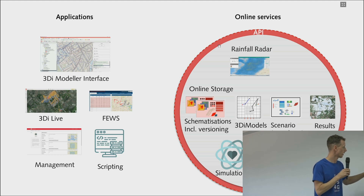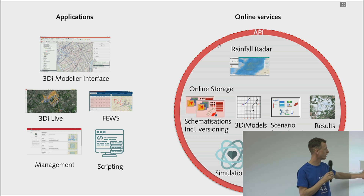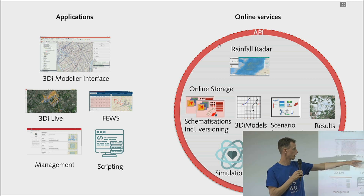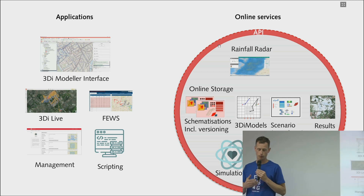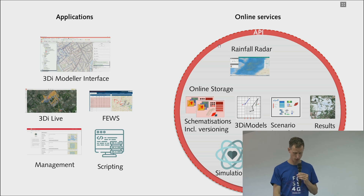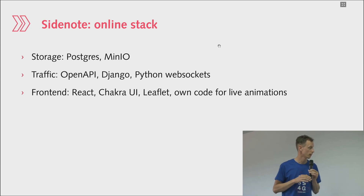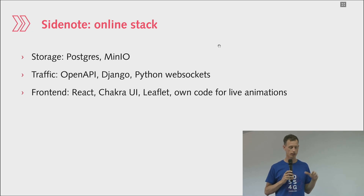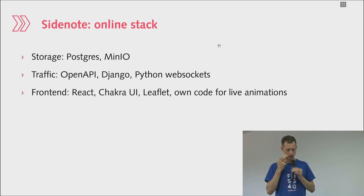All our own applications — the Modeler Interface and the online interfaces — interact through this API with online resources. Users can also make their own software integrations or scripts based on that same API. I mentioned I'd focus on the desktop application, the QGIS build; we also use a lot of open source software in our online stack, but I won't go into those details today.